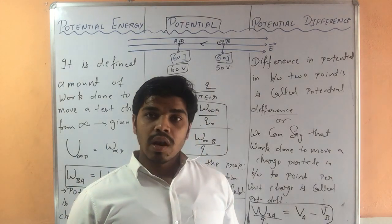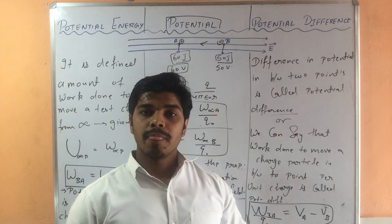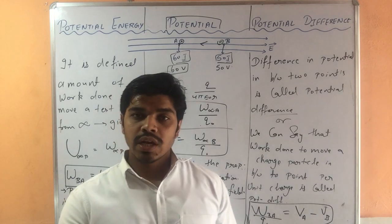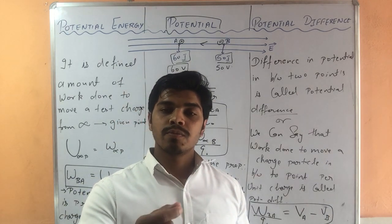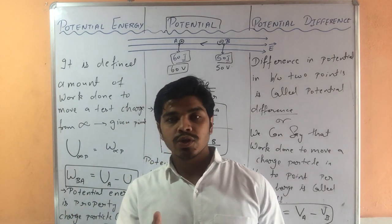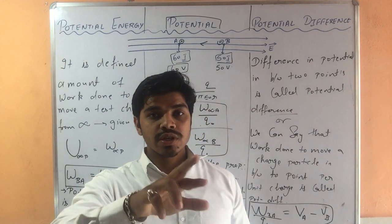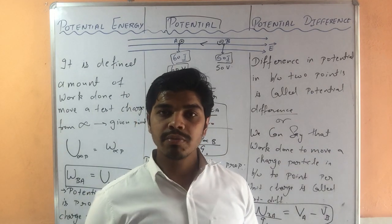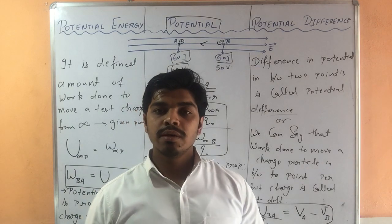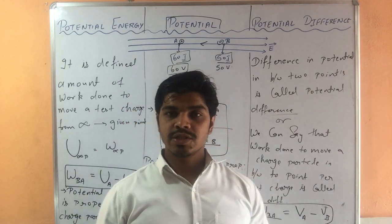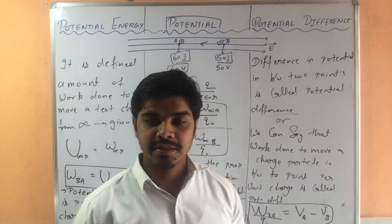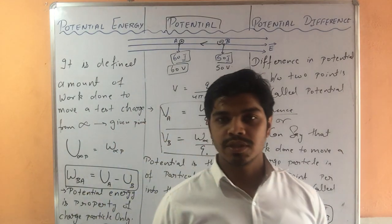In conclusion, we have understood that potential energy is a property of the charged particle, potential is a property of that particular location, and potential difference is the difference in potential between two points. Students, if you still have any doubts, please put them in the comment section. If you liked the video, please share, like, and subscribe. Thank you for watching.